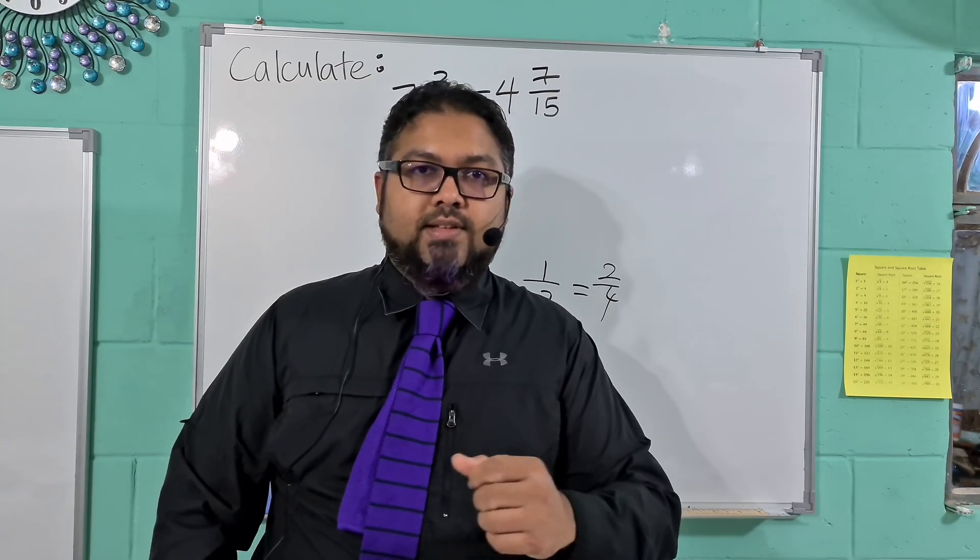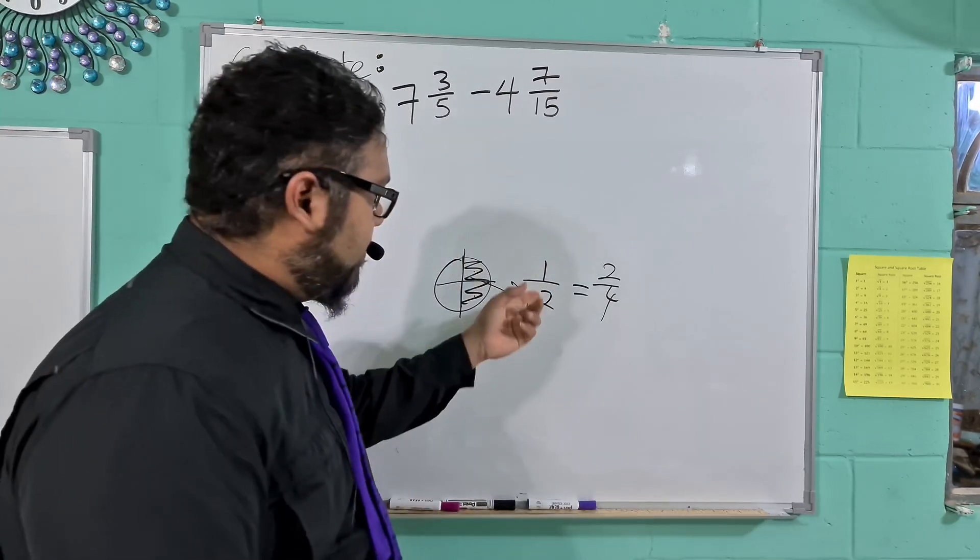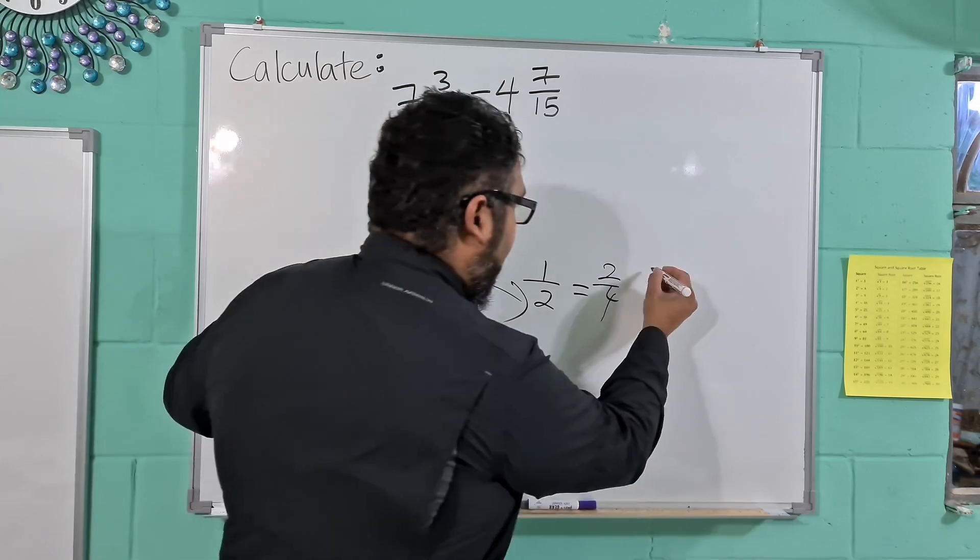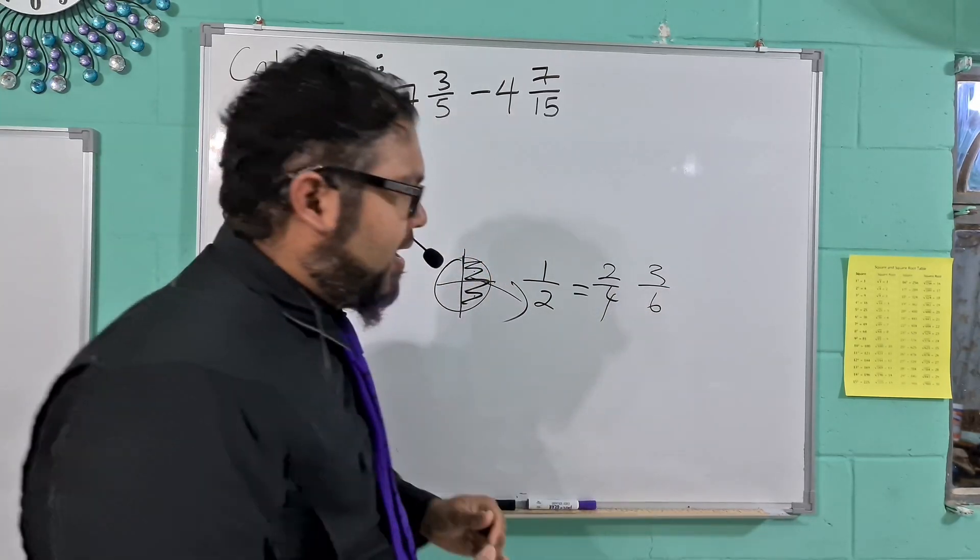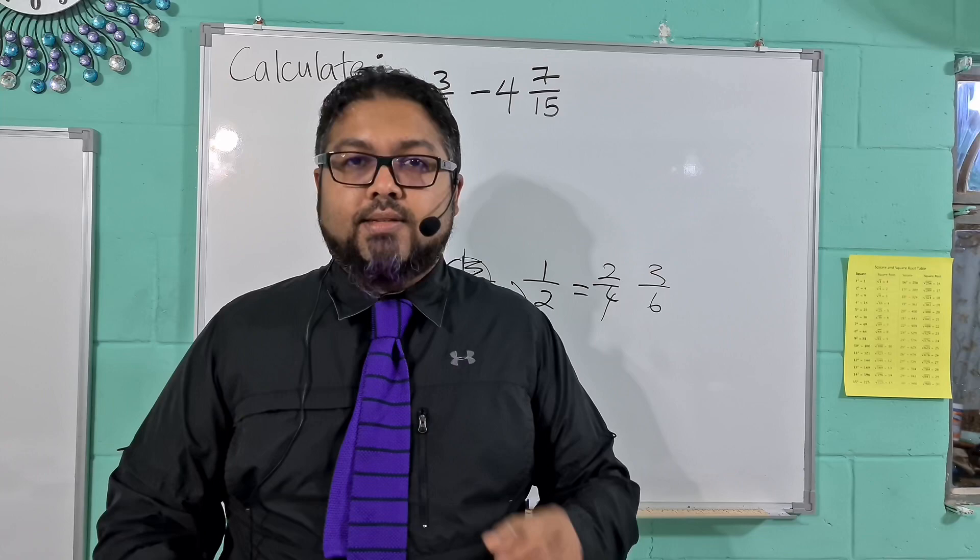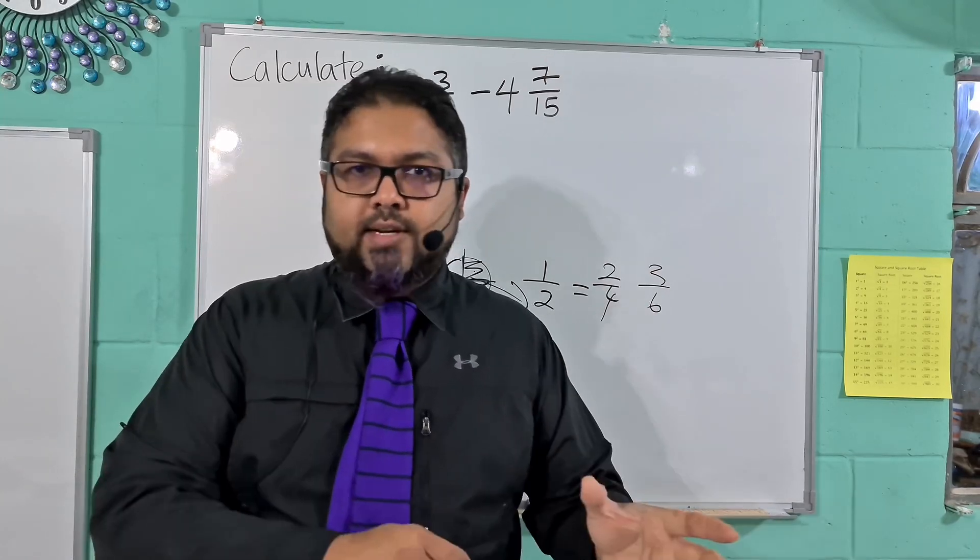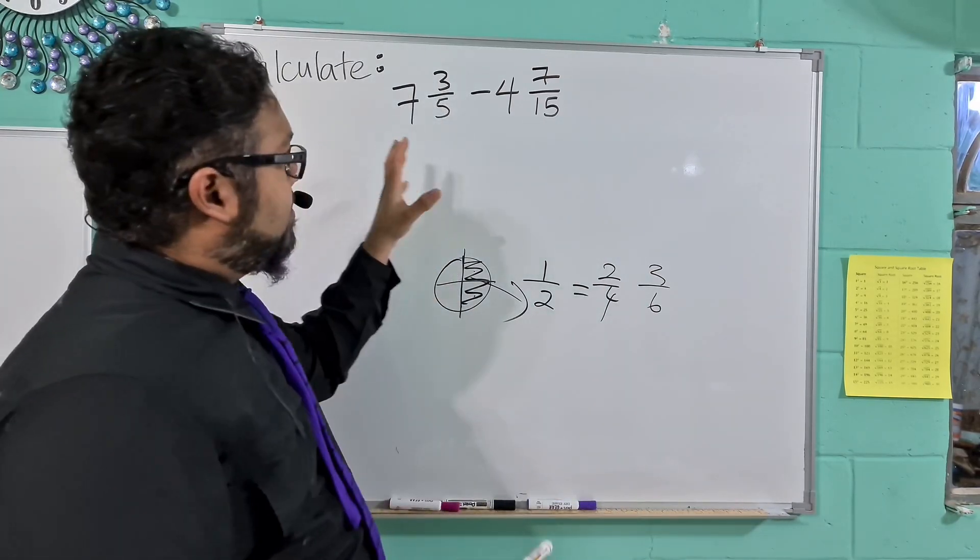These are called equivalent fractions. And fractions can be equivalent in a wide variety of ways. We can have 1 over 2, 2 over 4, 3 over 6. We go into much more detail in the classes itself, but that is one of the precursors we need to actually deal with this question up here.